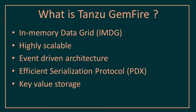What is Tanzu GemFire? It is an in-memory data grid that is powered by Apache Geode. It is a set of networked cluster computers that pool together their random access memory to let applications share data with other applications. It is highly scalable — it can scale up and scale down as per usage, achieving this using data partitioning. It has a very efficient event-driven architecture, and client applications can subscribe to real-time events to react to changes immediately. Tanzu GemFire's continuous queries notify our application when new data is available, which reduces the overhead on your SQL databases.